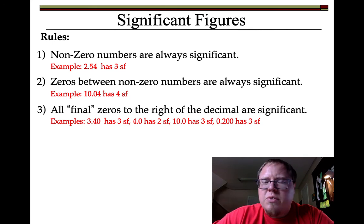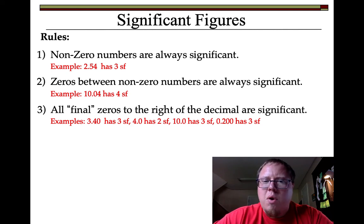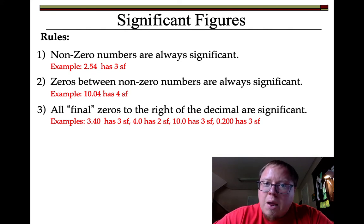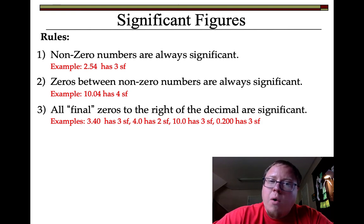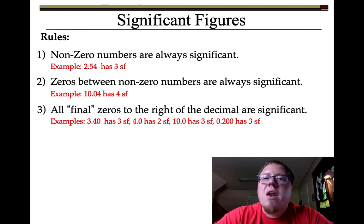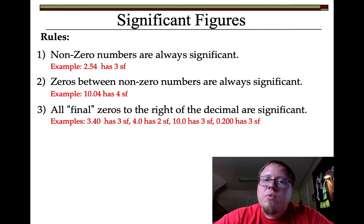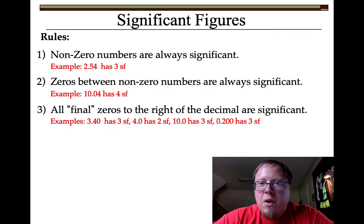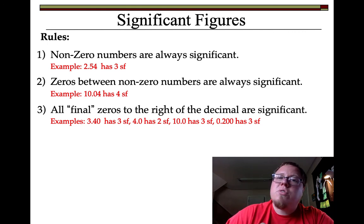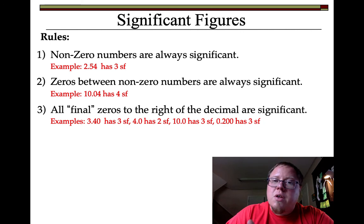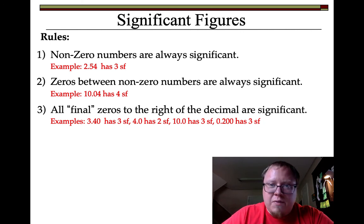0.200 — this means they had a .20 and a .21 line, and they think it's right on the .20. So they added another 0 to indicate they were able to read between .20 and .21. Those are what their lines are. So that .200 — all three numbers are significant.